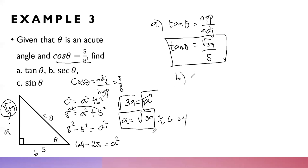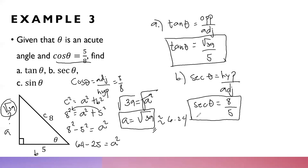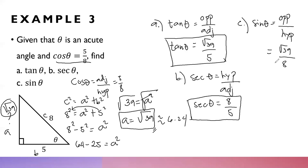For part (b), secant theta is hypotenuse over adjacent. The hypotenuse is 8 and the adjacent is 5, so secant theta equals 8 over 5. For part (c), sine theta equals opposite over hypotenuse. The opposite is the square root of 39 and the hypotenuse is 8, so sine theta equals square root of 39 over 8.